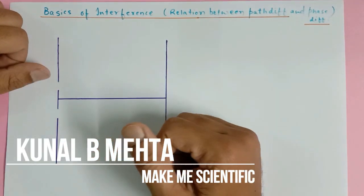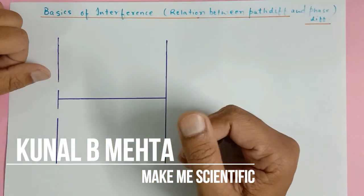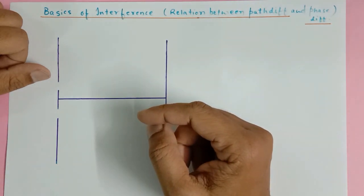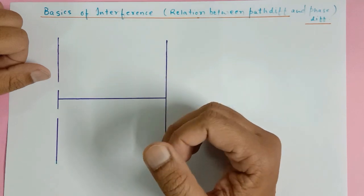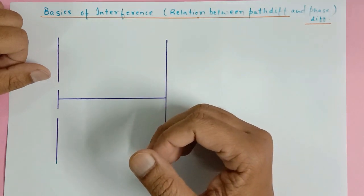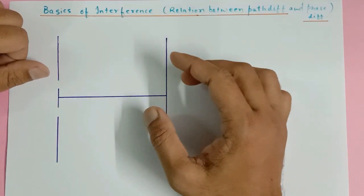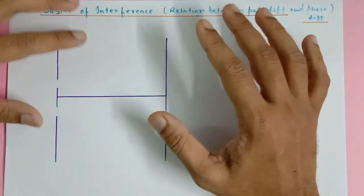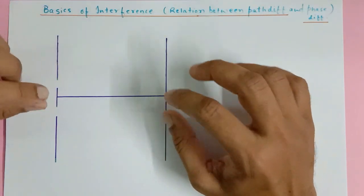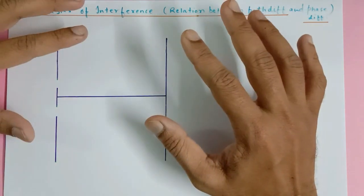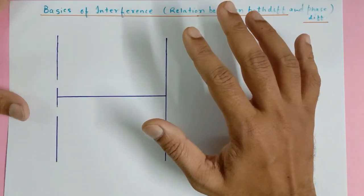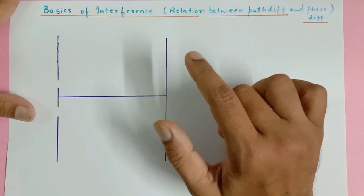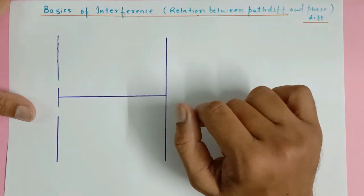Hello scientific genius people, how are you? Today we are going to start a lecture series on interference — that is the wave phenomenon. We will be discussing various factors that cause interference, then the intensity equation, fringe width equation, path difference equation. I will be explaining this lecture series very simply with the help of vector addition only — no heavy mathematical concepts. So stay tuned and watch the complete lecture series for the easiest understanding of the interference pattern.